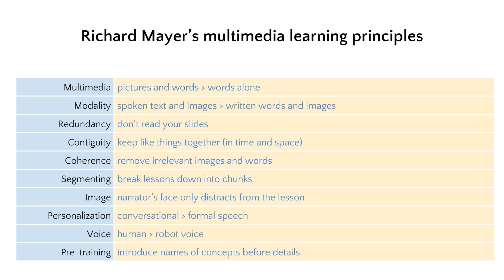A common example of contiguity is if you're reading a text and it refers you to a figure three pages down, and you're constantly flipping back and forth — that's much harder to understand than if that image was right on the same page. The coherence principle says to remove anything irrelevant. The segmenting principle says break content into small digestible chunks because our attention starts to wane after about 10 minutes, and if you don't understand something you can go back and watch it.